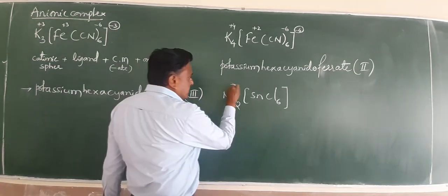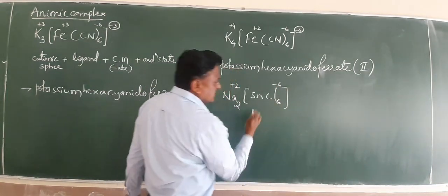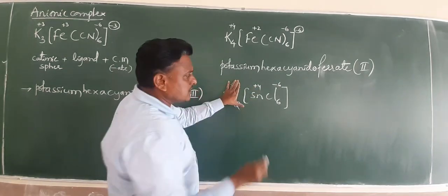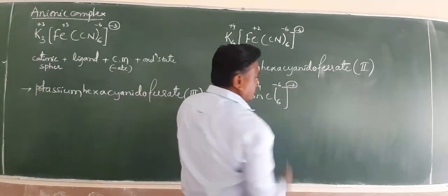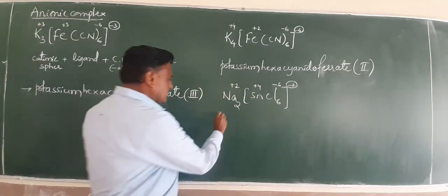Na2 SnCl6. It is a wonderful complex. Sodium here is plus 2. Cl6 is minus 6. Sn obviously is plus 4. Net is minus 2. Anionic complex.